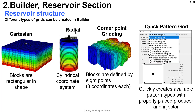Now we move to the radial cylindrical grid. You can see that it is similar to a cylinder — that's why it's called the cylindrical coordinate system. This grid cell is usually used for core flooding. When you would like to use core flooding data, you perform history matching to conduct the residual oil simulation to match with measurement data from the laboratory.